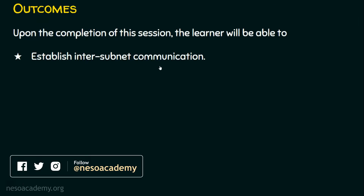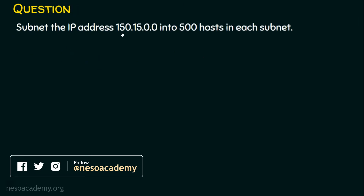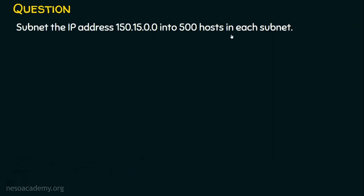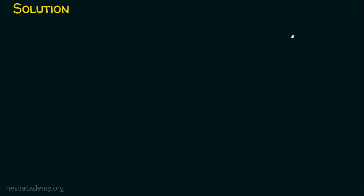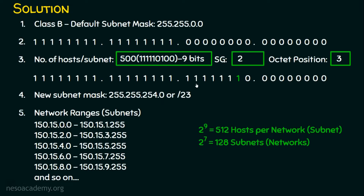In the last lecture, we saw this question: subnet the IP address 150.15.0.0 into 500 hosts in each subnet. We solved this using the five-step approach and got the subnets. We have subnet number one, two, three, four, five, and it goes on. In total, we have 2 to the power of 7, that is 128 subnets.